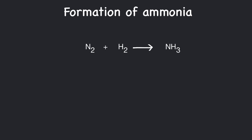Take any reaction — say, the formation of ammonia. Nitrogen + hydrogen gives ammonia. Balancing the equation gives us: N₂ + 3H₂ → 2NH₃. The coefficients give us the amount of reactants and products.